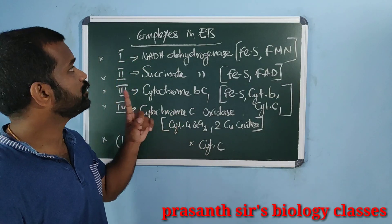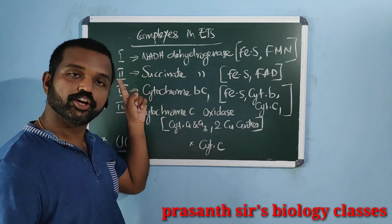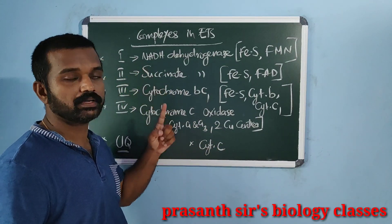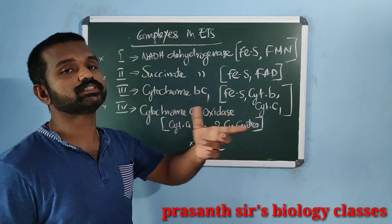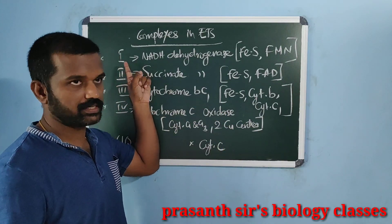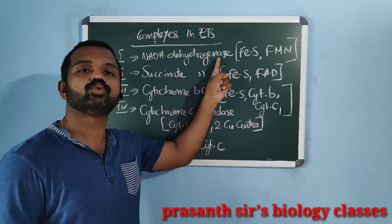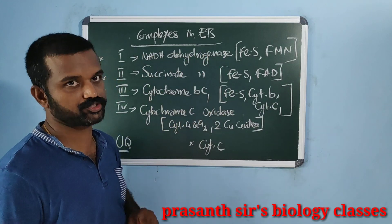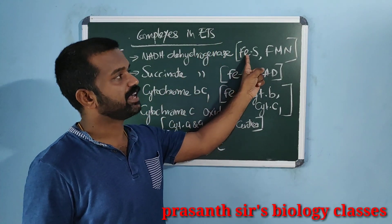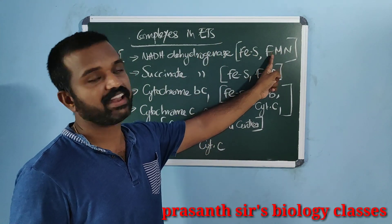The complexes involved in electron transport system are complex 1, 2, 3, and 4. Complex 1 is nothing but NADH dehydrogenase enzyme complex. Its components include iron-sulfur containing protein and FMN, flavin mononucleotide.